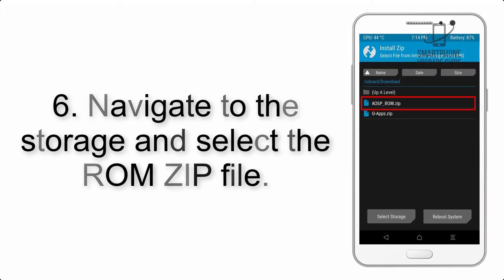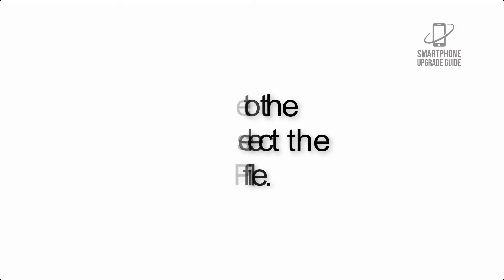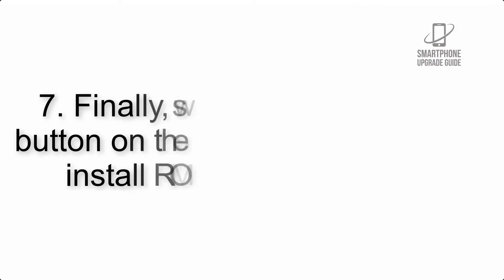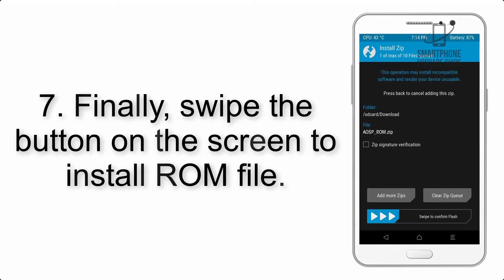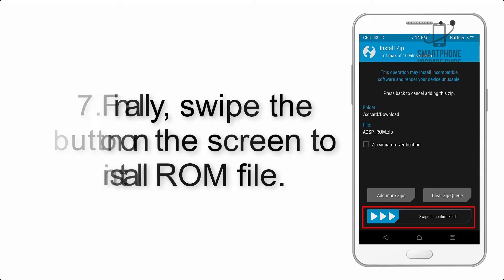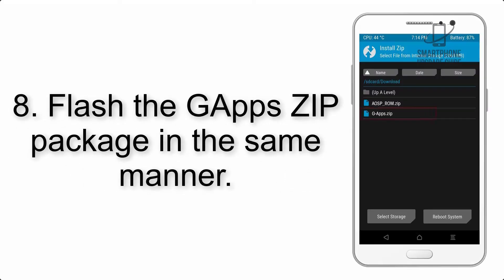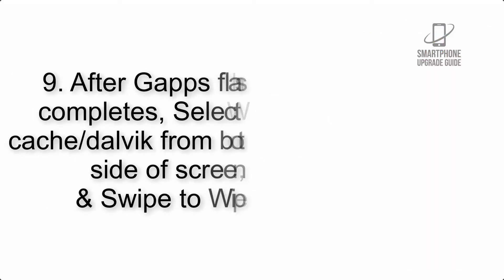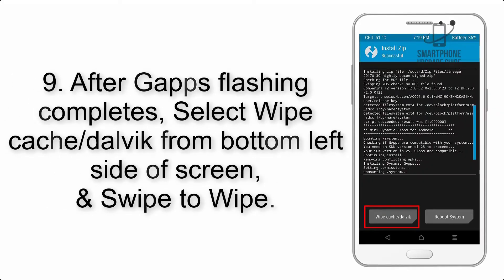Step 5: Go back to the recovery main screen and tap on the Install button. Step 6: Navigate to the storage and select the ROM zip file. Step 7: Finally, swipe the button on the screen to install the ROM file.